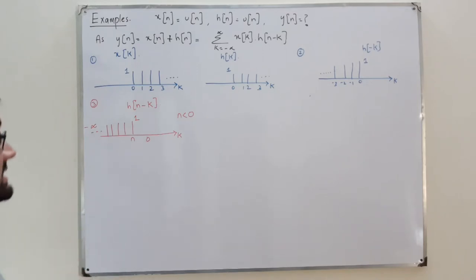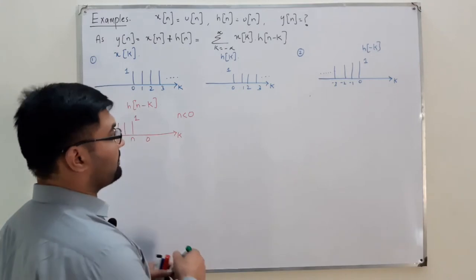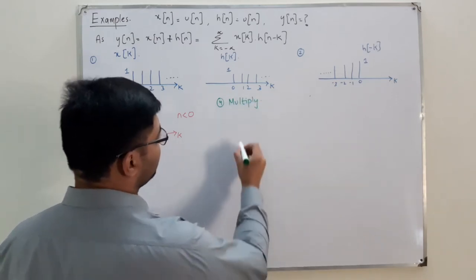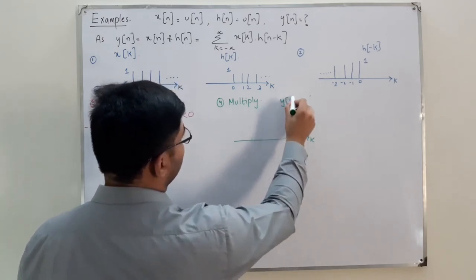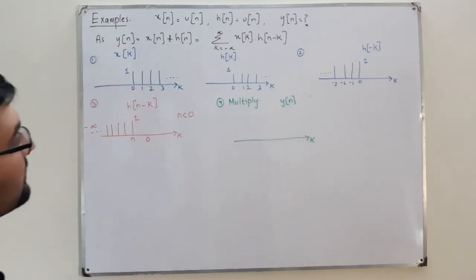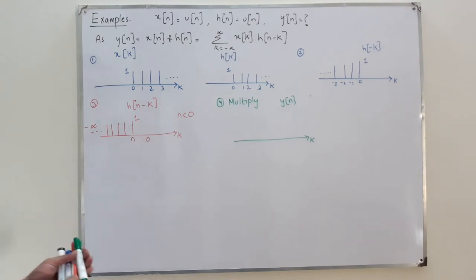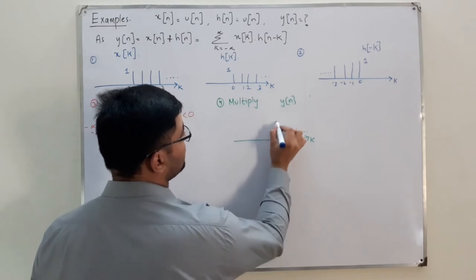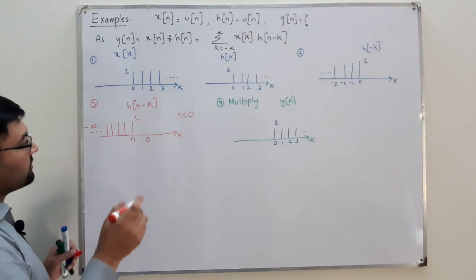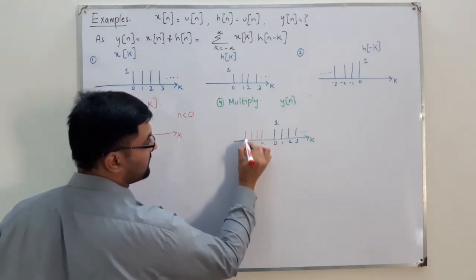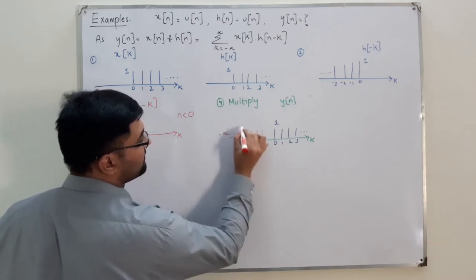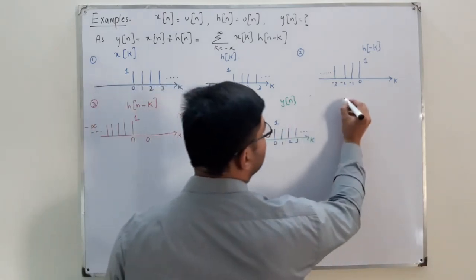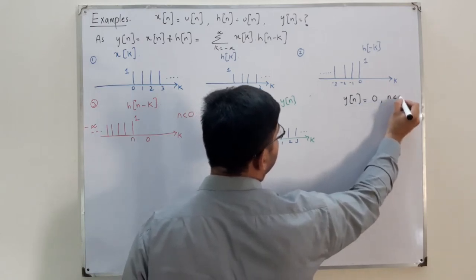Step number four is the multiplication step. Looking at the k-axis: x(k) exists for values greater than or equal to 0, while h(n minus k) for negative values of n is located to the left, from some negative value to negative infinity. We don't have any overlapping region, so y(n) equals 0 for n less than 0.